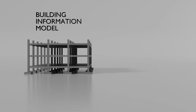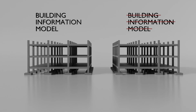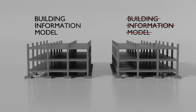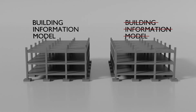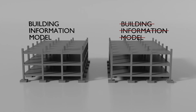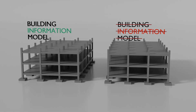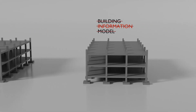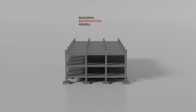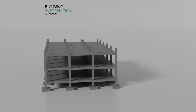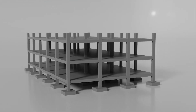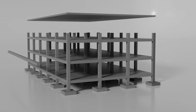What exactly is BIM? This is a building information model, while this is not. They might look the same on the surface, but they have one key difference: the missing information. While this model is a bunch of solids made out of lines, faces, and vertices, this model is self-aware. Each element knows what it is — a beam, slab, column.